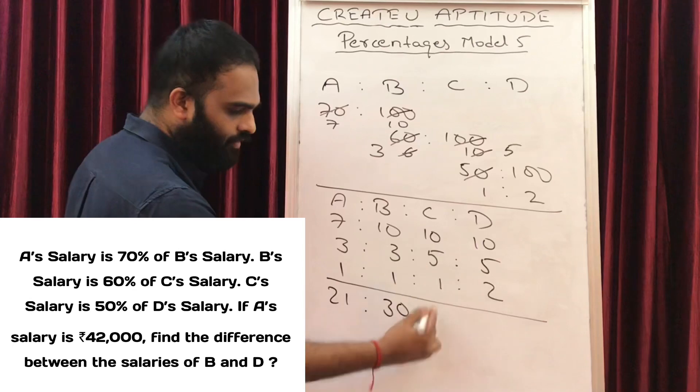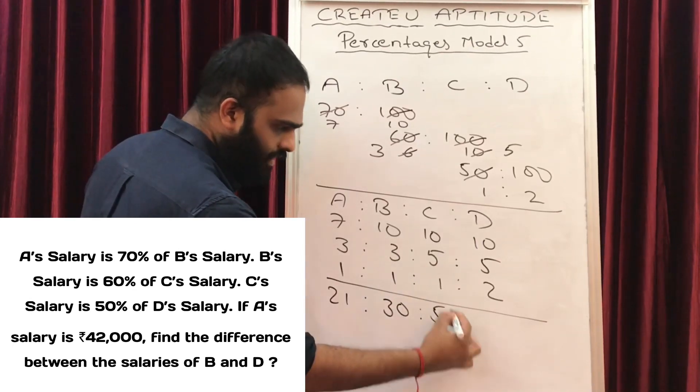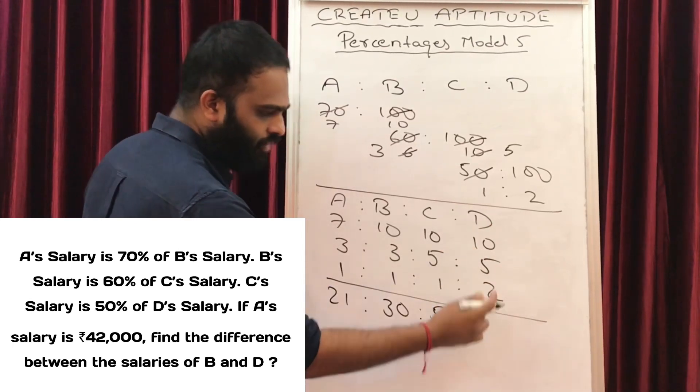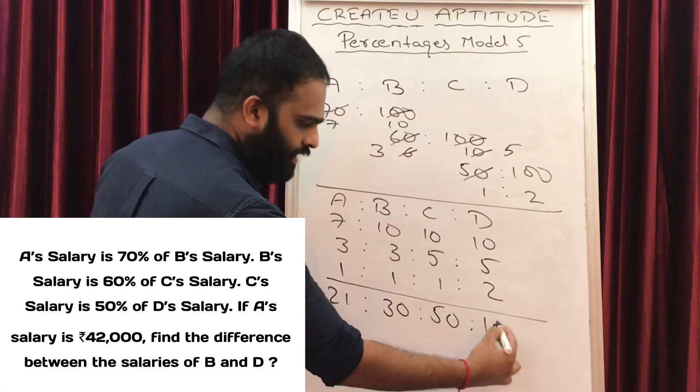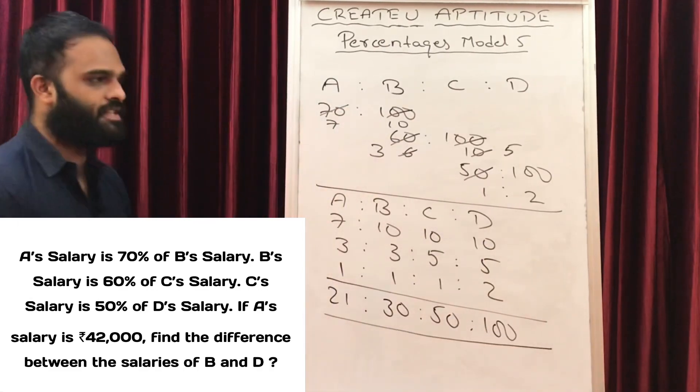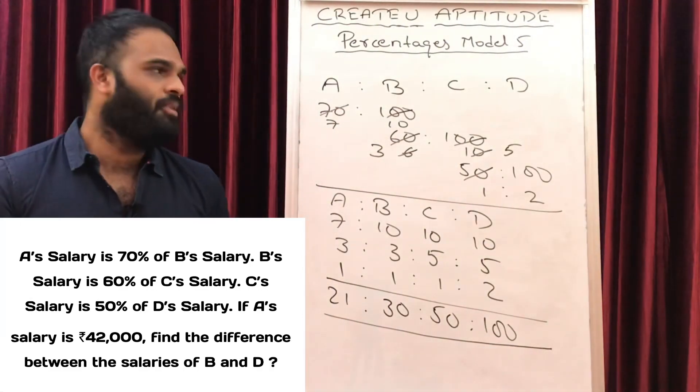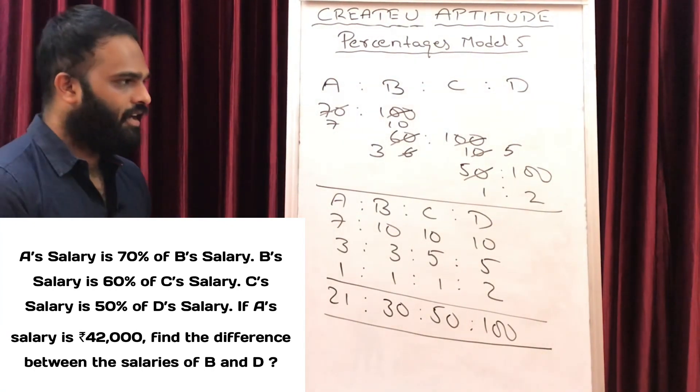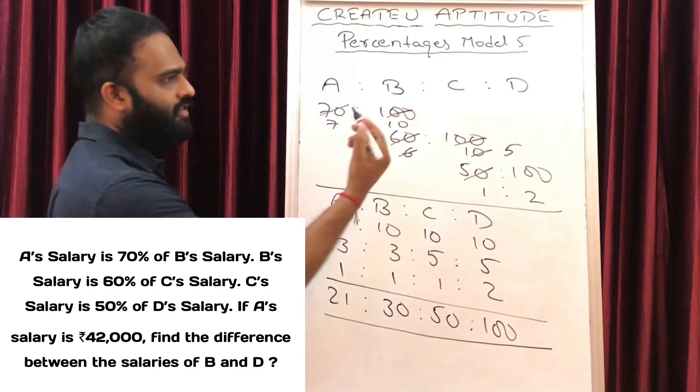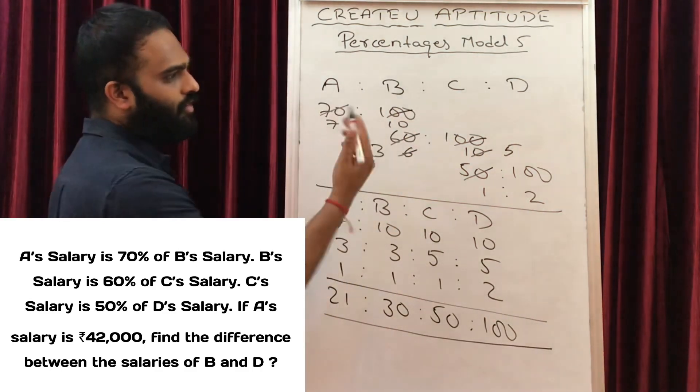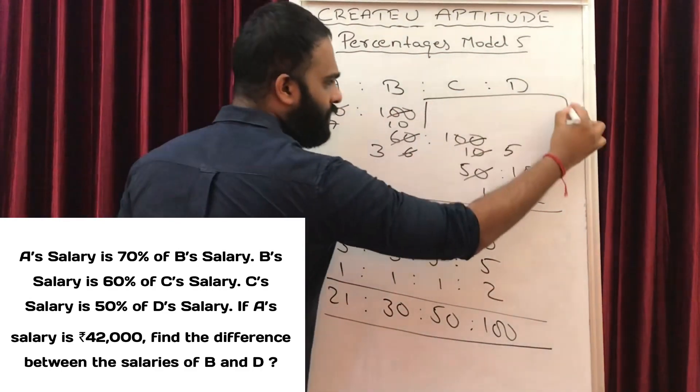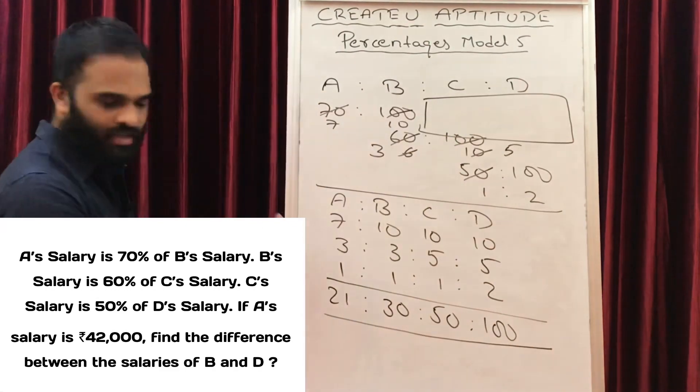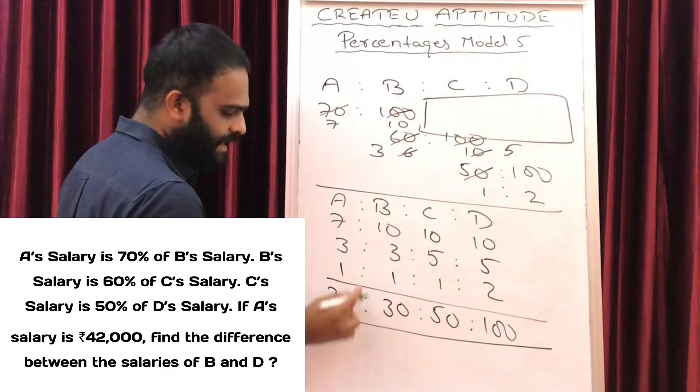C is 10 into 5 into 1, which is 50. D is 10 into 5 into 2. 5 into 2 is 10, 10 into 10 is 100. That's how we do A is to B is to C is to D ratio. Now we have A's salary is 42,000. I am doing this space because we don't have space, we are going to solve in this space.